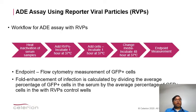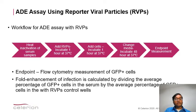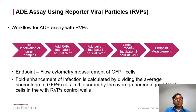Here is the workflow for ADE assays using reporter viral particles, or RVPs. The first step is to heat-inactivate the serum samples containing anti-SARS-CoV-2 antibodies. Then add RVPs and incubate for one hour at 37 degrees centigrade. Then add cells and incubate another hour at 37 degrees. Change media and incubate for 48 hours at 37 degrees. Finally, measure the endpoint. In our case, RVPs were transfected with GFP, so we measured GFP-positive cells using flow cytometry. Results are reported as fold enhancement of infection, calculated by dividing the average percentage of GFP-positive cells in the serum by the average percentage in the control wells with RVPs.